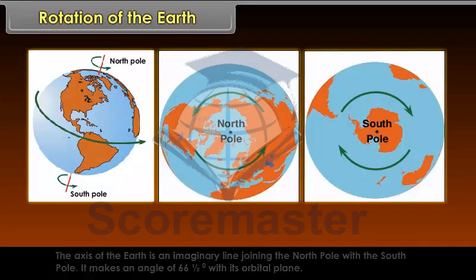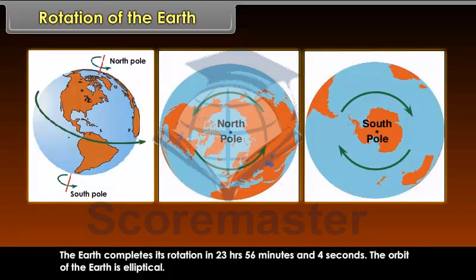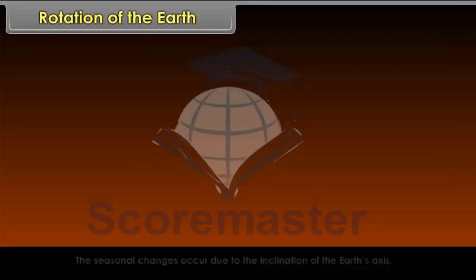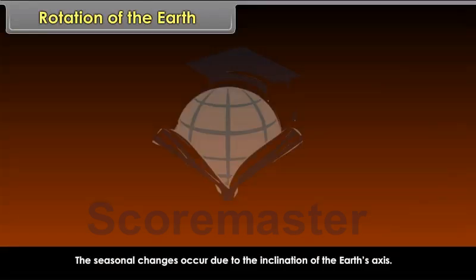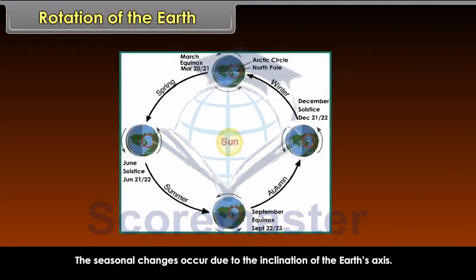The earth completes its rotation in 23 hours, 56 minutes, and 4 seconds. The orbit of the earth is elliptical. The seasonal changes occur due to the inclination of the earth's axis.